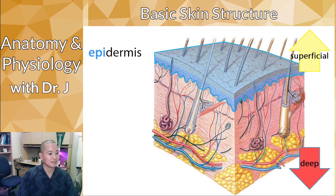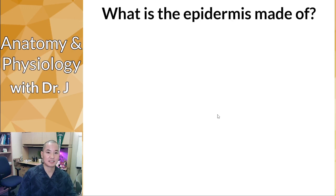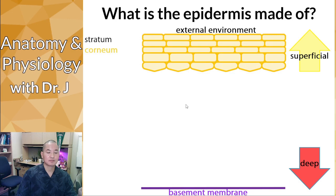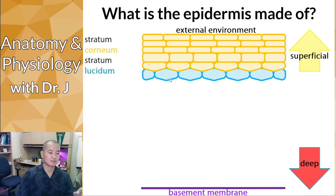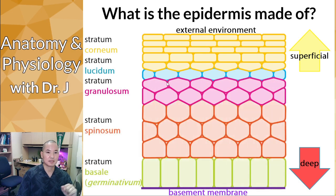What is the epidermis made of? It is an epithelium, but what type? Epithelia are layers of cells with specific shapes. We have a basement membrane that anchors everything and provides a surface for epithelial cells to grow on. Going from superficial to deep, we have strata — layers in Latin: stratum corneum, stratum lucidum (in some skin), stratum granulosum, stratum spinosum, and stratum basale, sometimes called the germinativum.